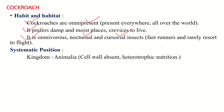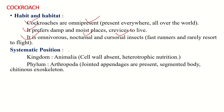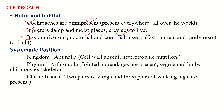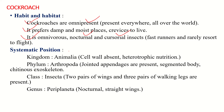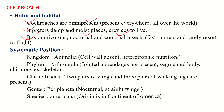When we see the systematic position of this organism, it belongs to the kingdom Animalia, phylum Arthropoda, class Insecta, genus Periplaneta, and the species is Americana. So this is Periplaneta americana, that is the cockroach.